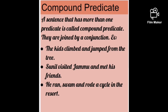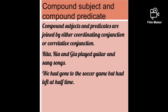'He ran, swam, and rode a cycle in the resort' — here we have a compound predicate: ran, swam, and rode a cycle. A sentence that has more than one predicate is known as a compound predicate. Compound subjects and compound predicates are joined by coordinating conjunctions — mostly and, but, or — or correlative conjunctions like either/or, neither/nor, both/and, etc.